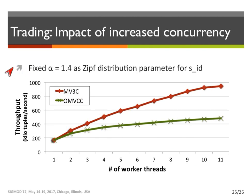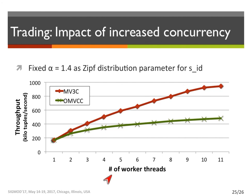The next aspect we want to look at is the impact of increasing the concurrency level. For this purpose, we fixed the amount of conflict and changed the concurrency level from a single thread to 11 threads. Similar to the previous graph, the Y-axis shows throughput and higher is better. As you see, by increasing the level of parallelism, MV3C scales better compared to the predicate-based optimistic MVCC in the presence of conflicts.